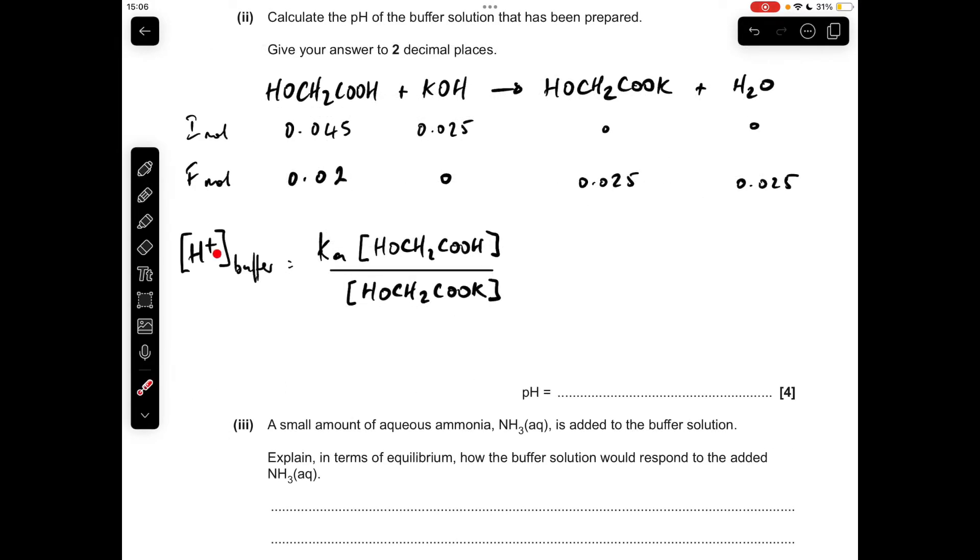So moving on to the calculation, the H-plus concentration of a buffer can be calculated by multiplying the Ka of the weak acid by the acid concentration all over the salt concentration. I'll refer to this as the acid over salt expression, so I'll get my acid and salt the right way around.